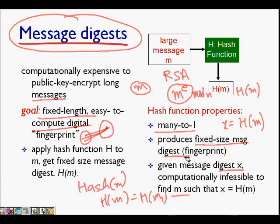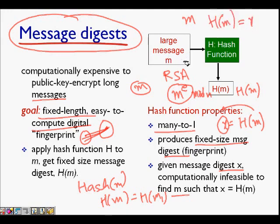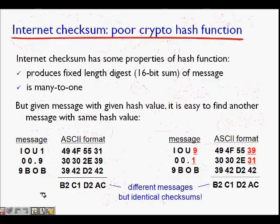That is, if we have X = H(M), it is computationally infeasible to find any M through the inverse process such that H(M) = X. It is very difficult — basically infeasible — to find a message for which H(M) equals X. For example, the internet checksum is an example of a hash function.